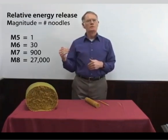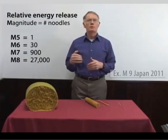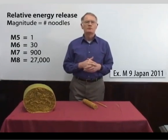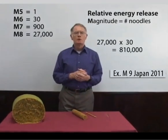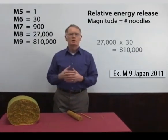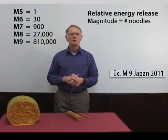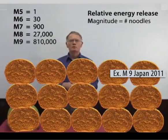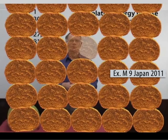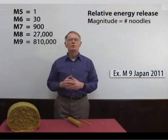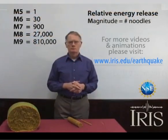If you want to go to a magnitude 9 earthquake, for example the Japan 2011 earthquake, we'd have to take this bundle of 27,000 strands of spaghetti multiplied by another factor of 30, and that bundle of spaghetti would go from floor to ceiling about the width of a door frame.